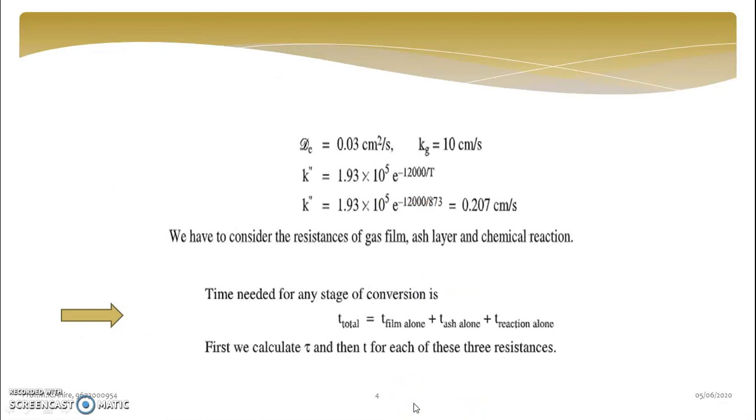Diffusivity is given. Diffusivity is given, K double dash is given but it is in terms of temperature. So just substitute the value of temperature, you will get K double dash value. Kg is also given. Why these three terms are given? DE, kg, K double dash, because we have to consider all the resistances.